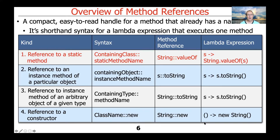An example would be String::valueOf, which will return the value of a String. The corresponding lambda expression would be s -> String.valueOf(s). But given a choice, we would typically prefer to use the method reference version because it's much more concise — there's less syntax going on there.